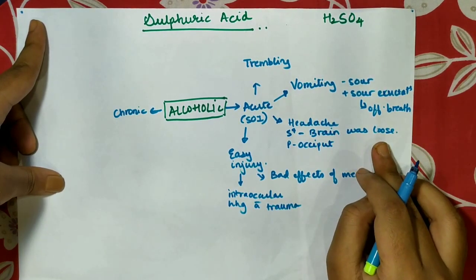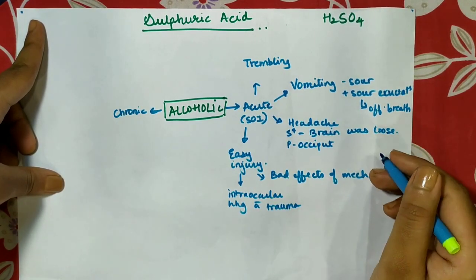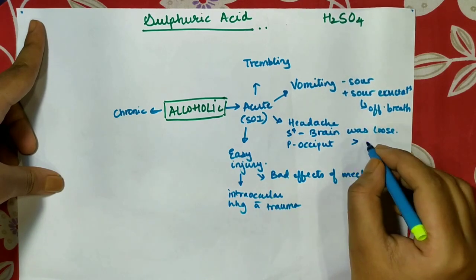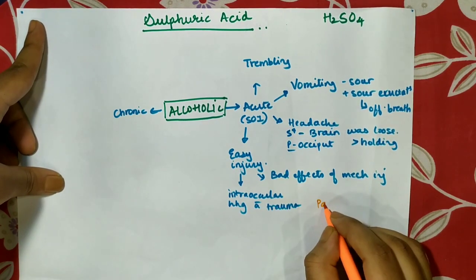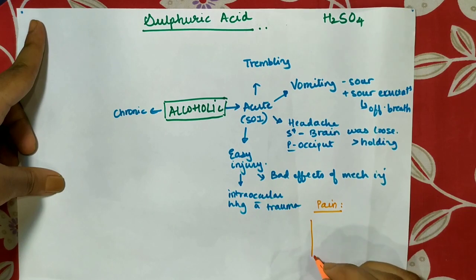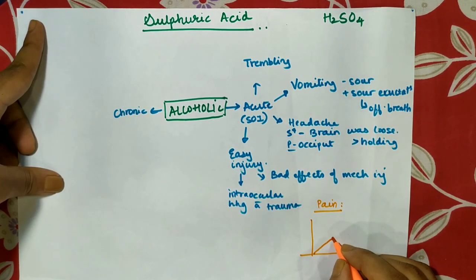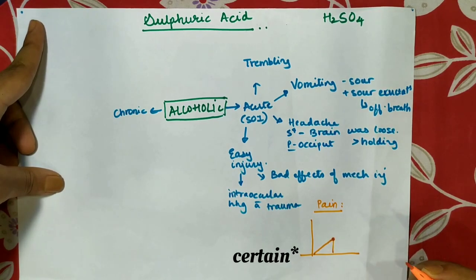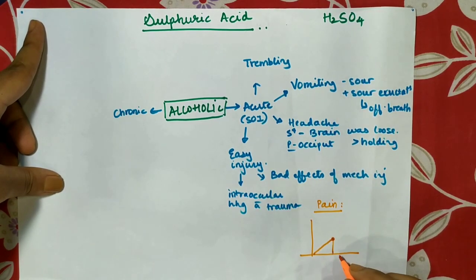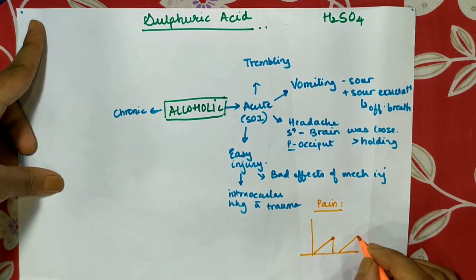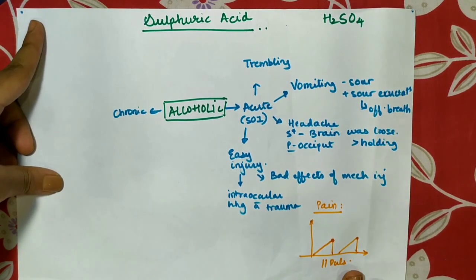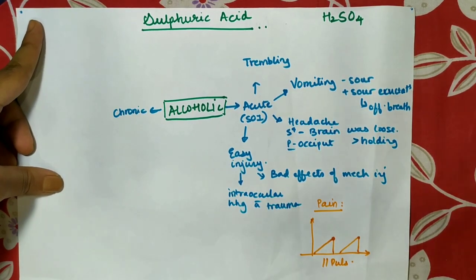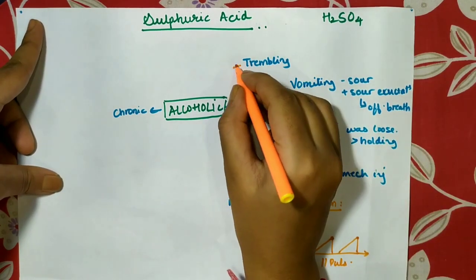This sensation is also found in Belladonna, and the person feels better by holding hands near the head. Regarding the pain pattern in the remedy: the pain is gradual and slow, reaches a sudden height, and then ceases suddenly. This pattern is repetitive — gradual onset, reaching a height, sudden cessation. This is similar to a pulse diagram and represents the pain pattern of Sulfuric Acid.